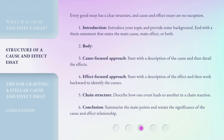Every good essay has a clear structure, and cause and effect essays are no exception. 1. Introduction: Introduce your topic and provide some background. End with a thesis statement that states the main cause, main effect, or both. 2. Body — with three possible approaches: a cause-focused approach, where you start with the cause and detail the effects; an effect-focused approach, where you start with the effect and work backward to identify causes; or a chain structure, describing how one event leads to another in a chain reaction. 3. Conclusion: Summarize the main points and restate the significance of the cause and effect relationship.